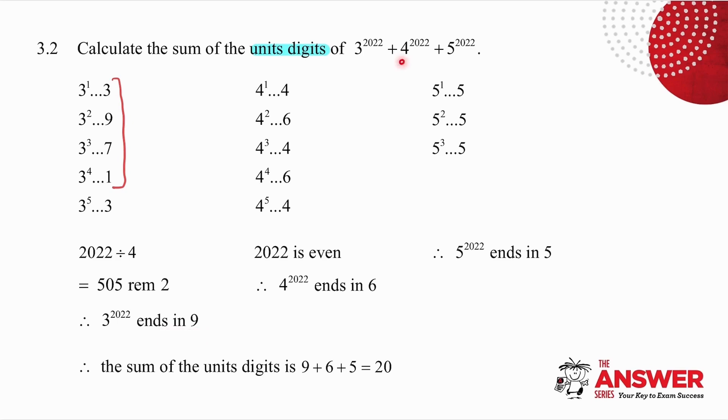I do the same thing with 4^2022. 4^1 is 4. 4^2 is 16, it ends in 6. 4^3 is 64, it ends in 4. And so on. What do you notice with 4?